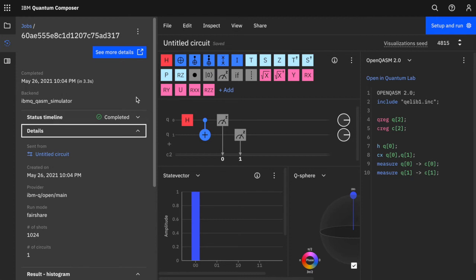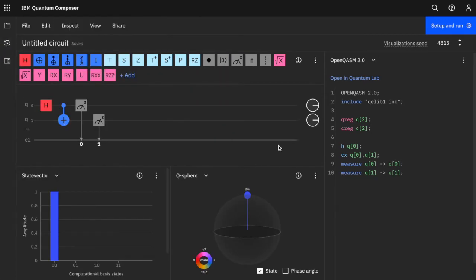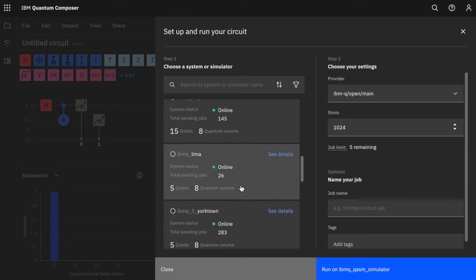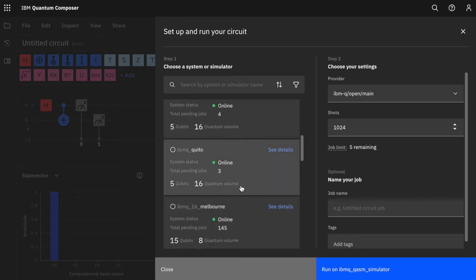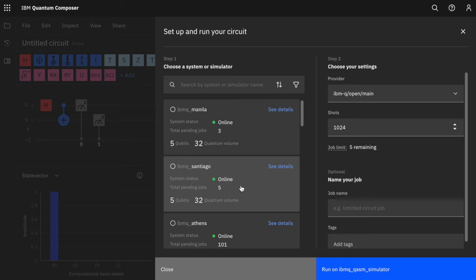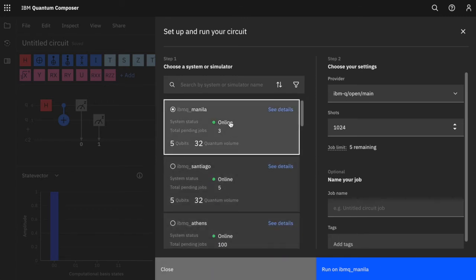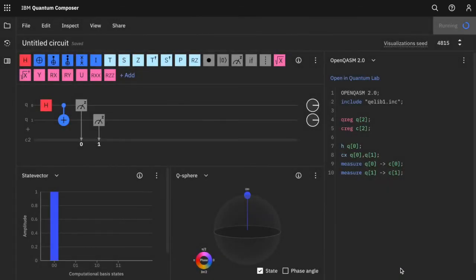So if we now want to go and run this circuit again on a real quantum computer. Let's go back to setup and run. Now let's select a quantum computer that hasn't got too many jobs in its queue. Melbourne has 145. Manila had 3. Let's select Manila. Again, we'll leave the shots at 1,024. And then let's click run.